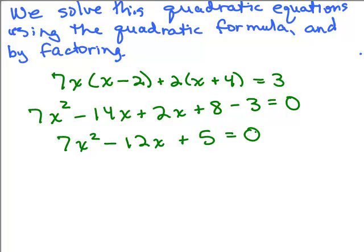Now, if you're trying to solve a quadratic equation and you can factor it, that's usually the quickest way to do it. So let's go ahead and try factoring. The only possibilities for the first terms are 7X and X, and the only possibilities for the constants are 5 and 1. The question is where the 5 goes and where the 1 goes.